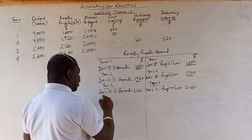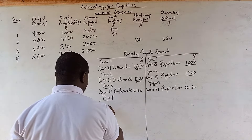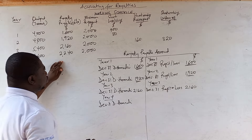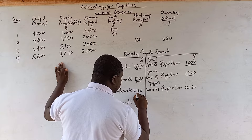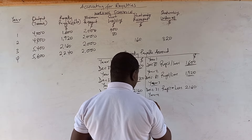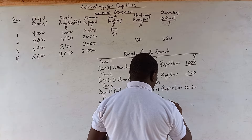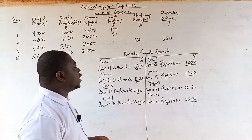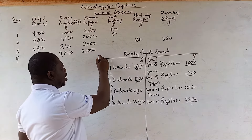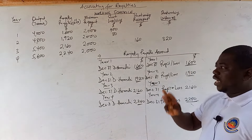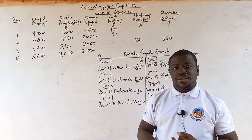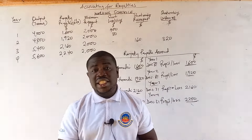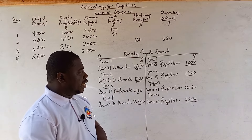Year 4: debit de-Homaji $2,240, credit Profit or Loss $2,240, then double underline to close. The Royalty Payable Account is now complete for all four years. This is the simplest of the three accounts. We now move to de-Homaji's Account, where the short workings will appear.